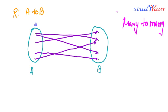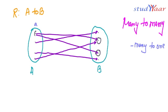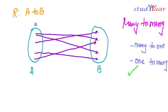Let us see why. Over here I have many elements of A which are related to the same element of B — this is many-to-one. So if my relation is both one-to-many and many-to-one, I call this a many-to-many relation. And because it contains one-to-many, it is also not going to be a function.